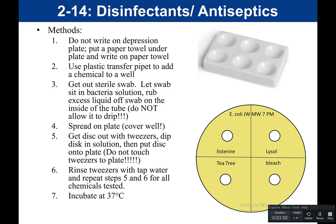This is showing what the procedure would look like for soaking the discs. You would have a depression plate with little wells, and you would add the chemicals to the wells — one well with Listerine, one with Lysol, one with tea tree, and one with bleach. In class, we would put a paper towel underneath and label on that rather than writing directly on the plate. For some chemicals, you would use a plastic transfer pipette to transfer the liquid into the wells.